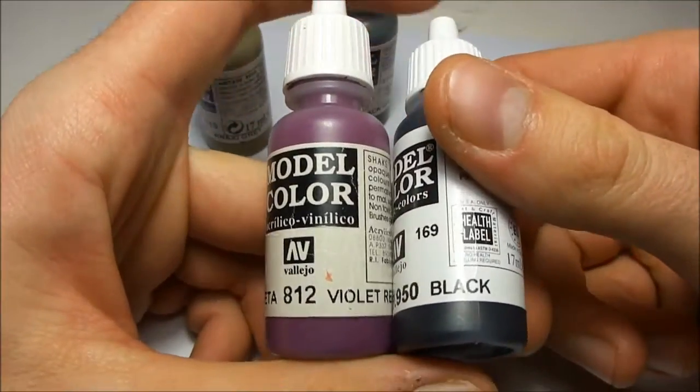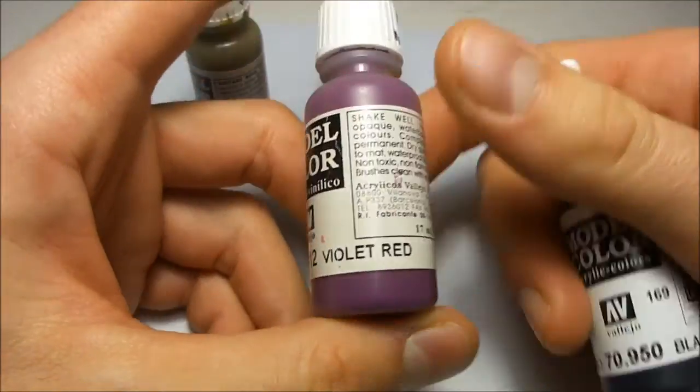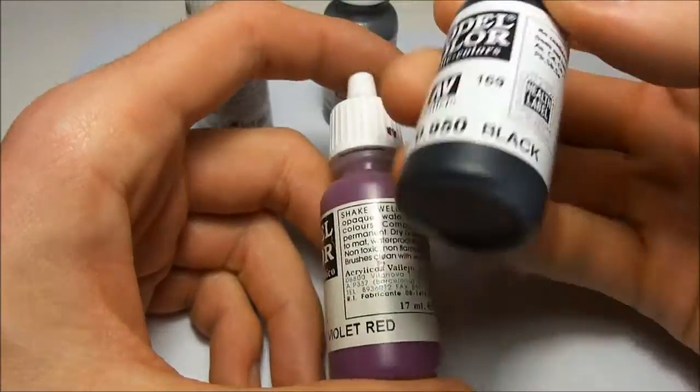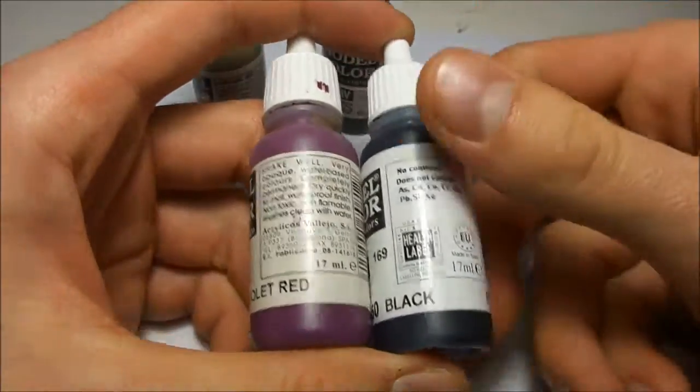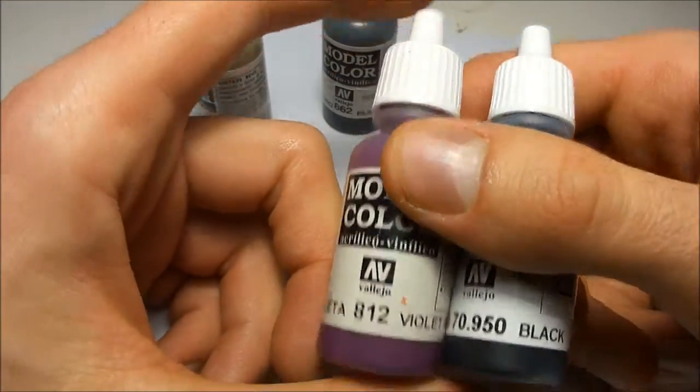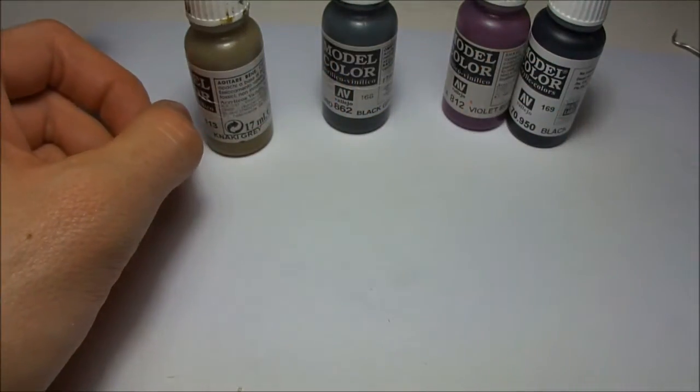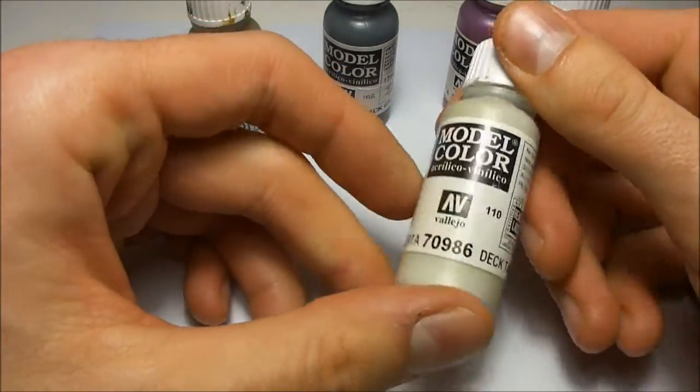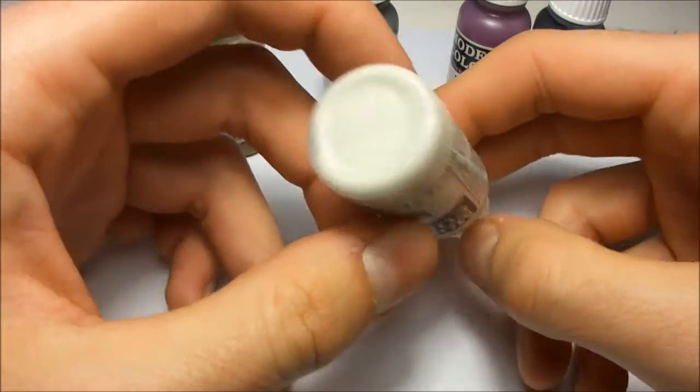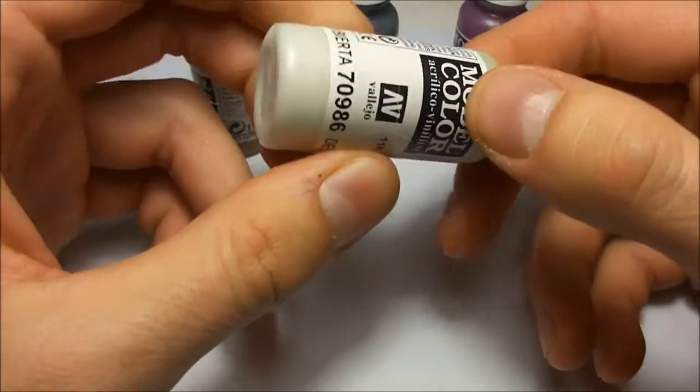So I start with a pool of violet red with only a pinpoint of black in it, and then I add a bit more black to the mix. And then to create a highlight, I started off with the Deck Tan - pretty nice color, just a very warm, warm off-white.